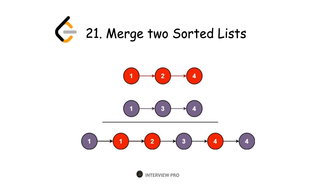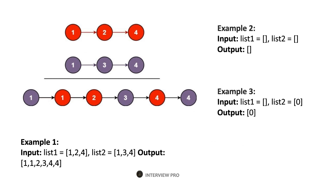Hey everyone, let's solve another LeetCode problem today. The problem we are going to discuss is 'Merge Two Sorted Lists'. Let's look at the examples given in the problem. We have two lists and the output after merging these two lists in sorted order is this one, and there are two other examples as well.